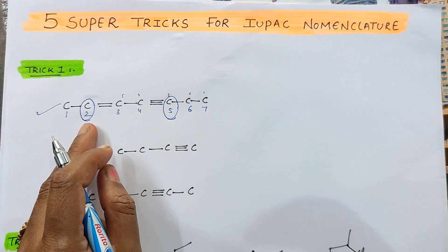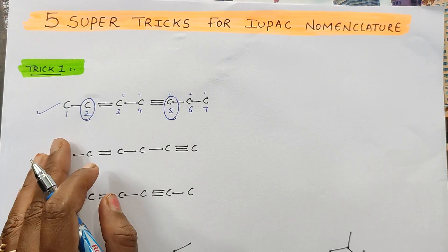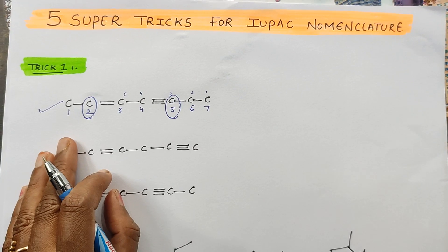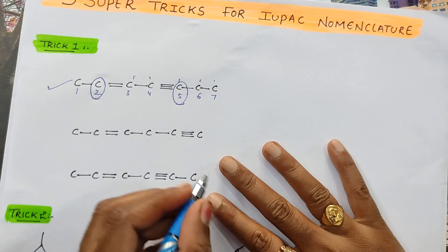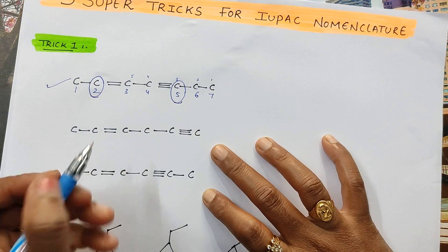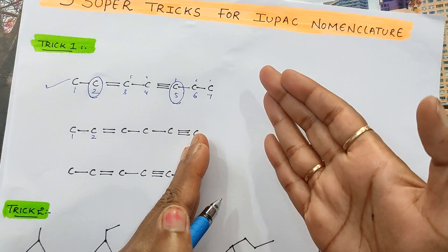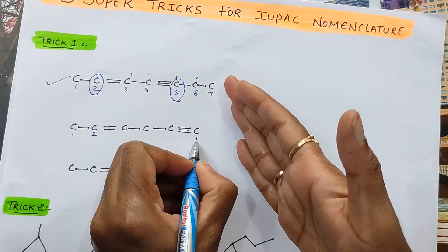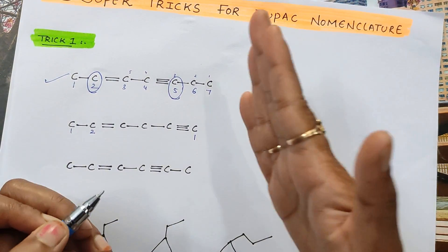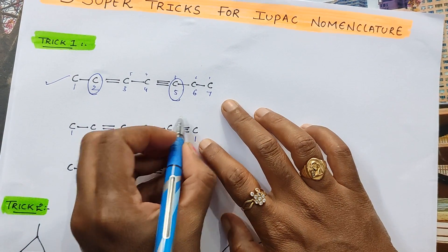This gives you clarity that when you are giving numbering, double bond or triple bond — anyone should get the lowest numbering. For example, see this structure. If you give from left to right, double bond gets the 2nd position. If you give from right to left, triple bond gets the 1st position. So, right to left is correct because triple bond is getting the lowest position.